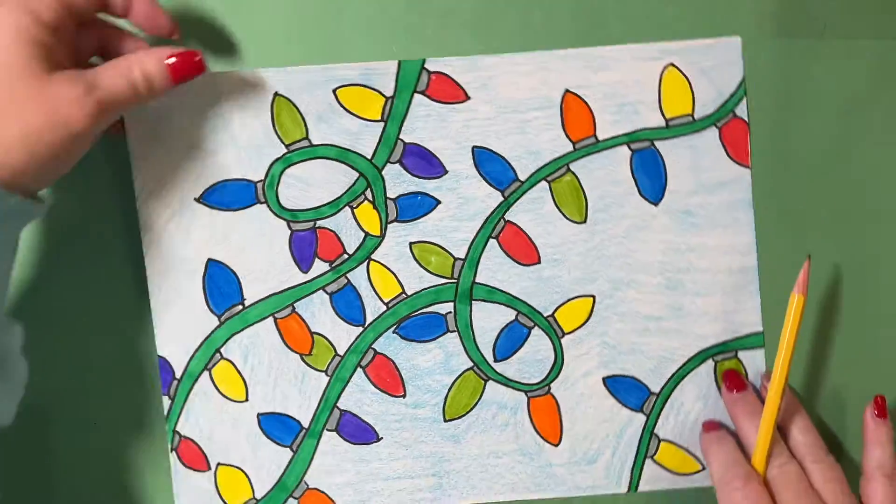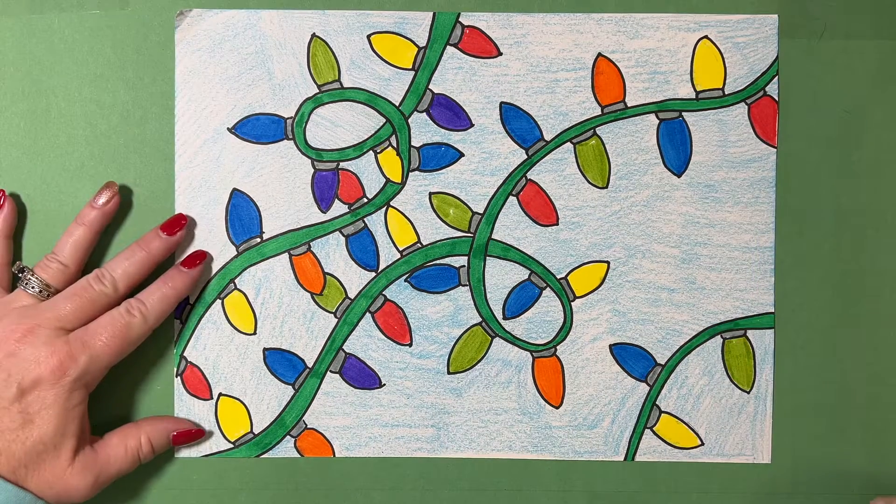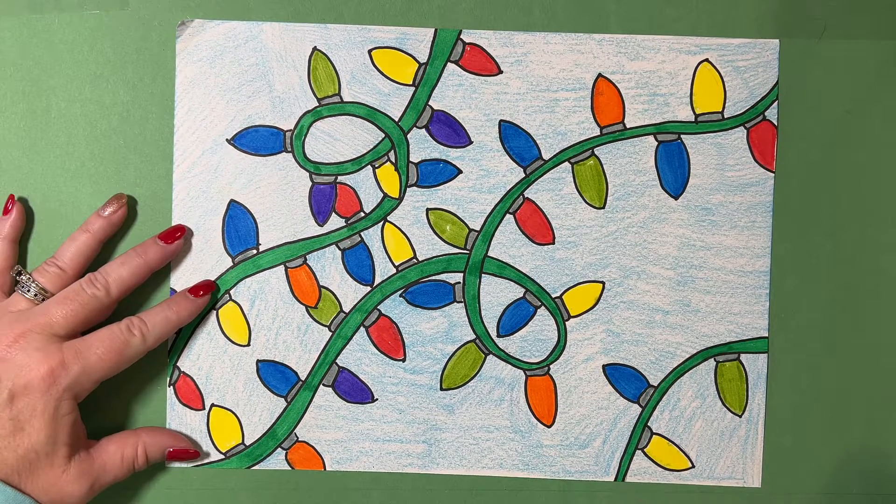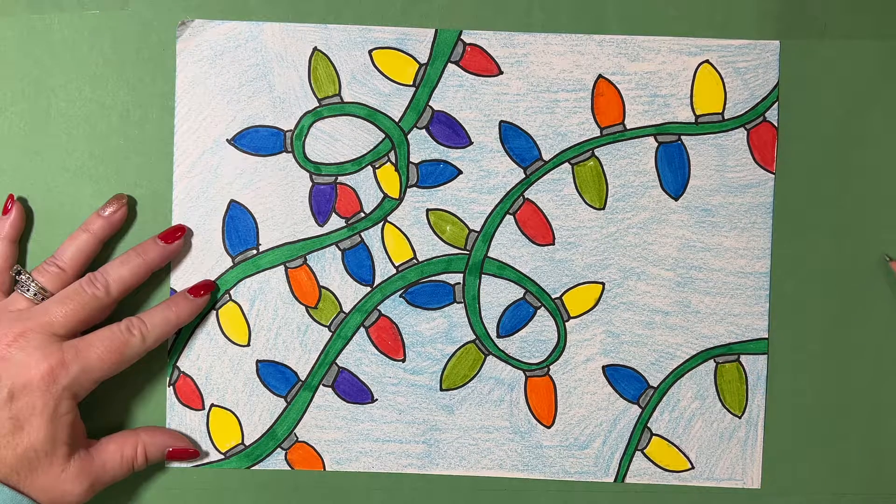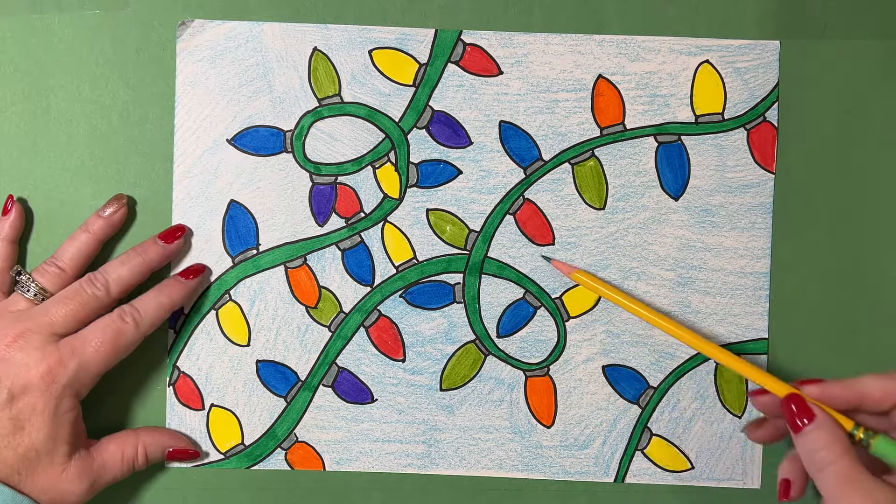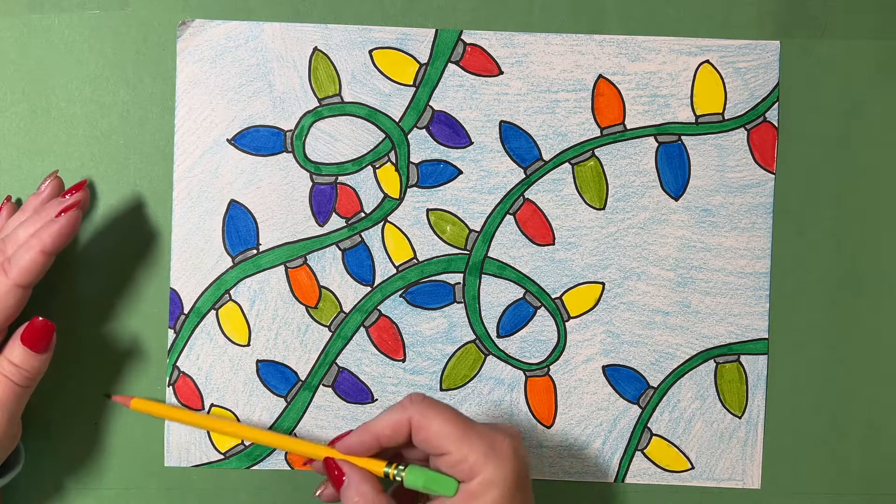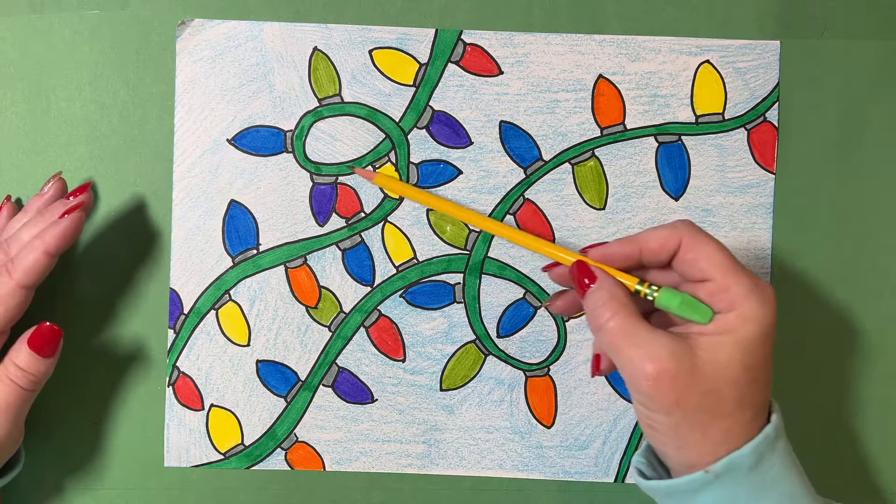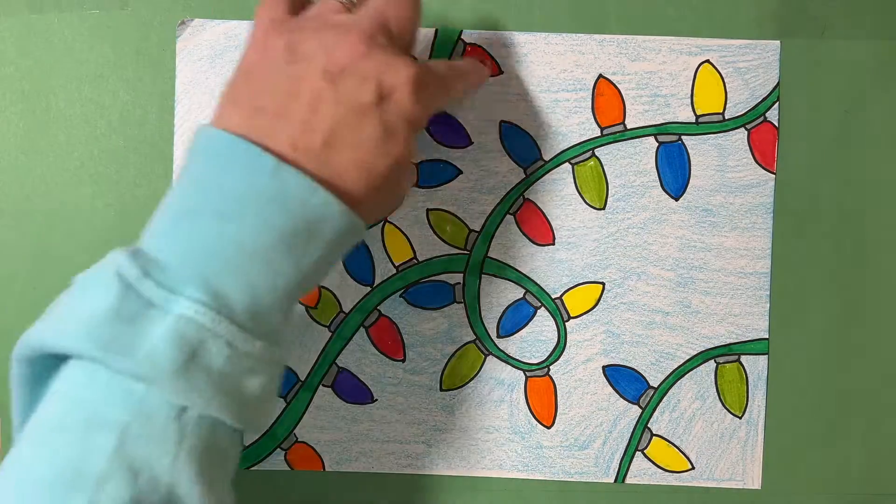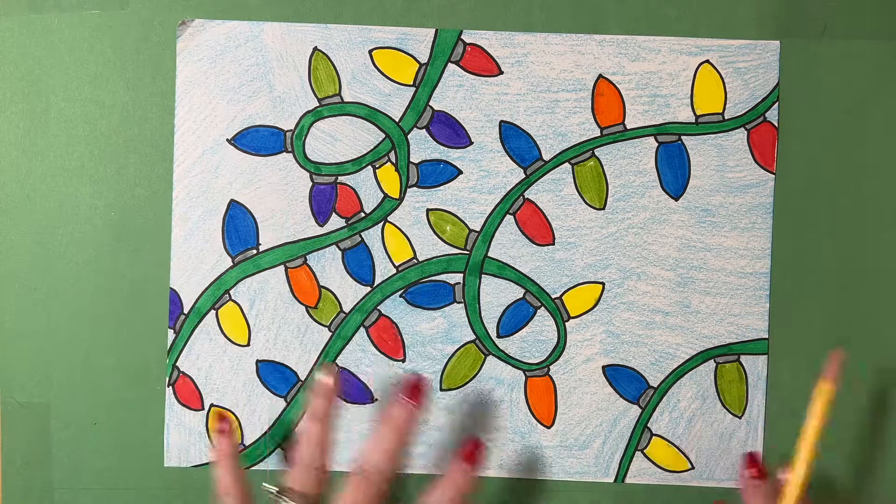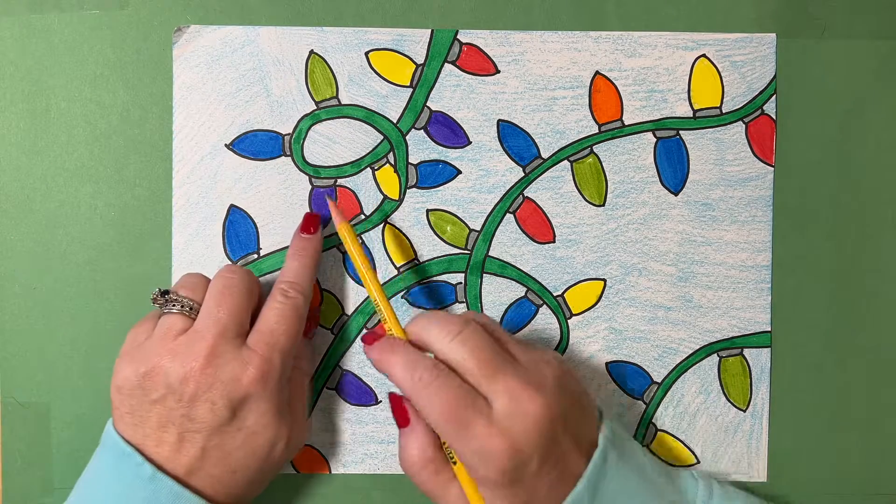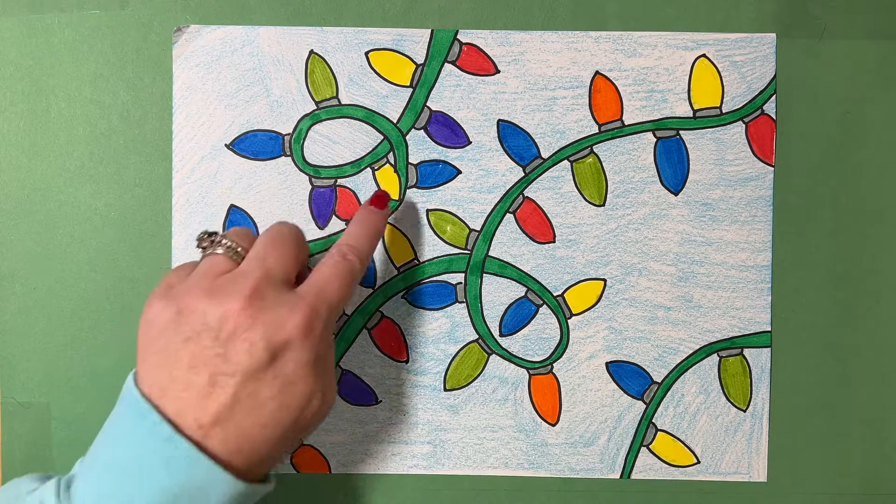Then I did one that is a little bit more involved like this right here. So you can imagine my strand of lights are coming off the page right here and then we see them, and then they disappear. They come around, come back onto the page, loop around, go off the page again, come back around, loop around and then disappear off the page. And then all along, I've got my Christmas bulbs or my holiday bulbs and some of them overlap each other like you see right here.